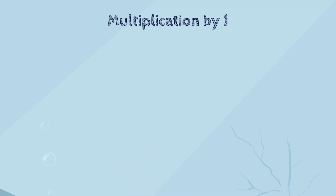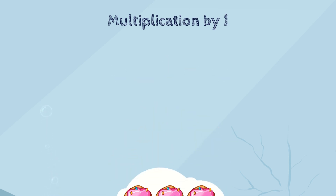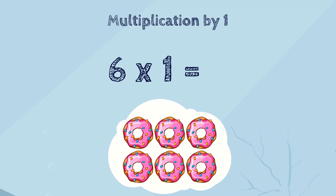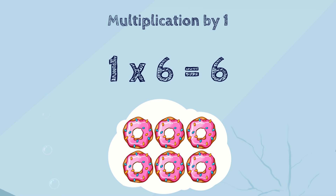Now, let's think. What is six times one? Six! Sure! I think you've already understood the idea. Any number multiplied by one stays the same. I think you also remember that changing the order of numbers in multiplication doesn't change the answer. So it doesn't matter if one is the first or the second number — the answer always stays the same.